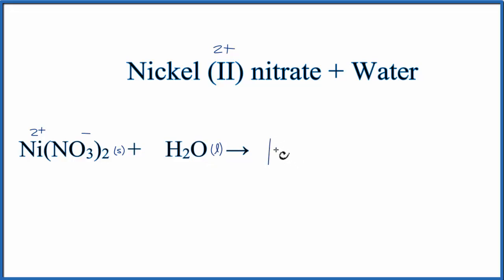That gives us Ni2+ and the nitrate ion. We have a 2 down here as our subscript. That tells us we have 2 nitrate ions, so we should put a coefficient of 2 in front of the nitrate.